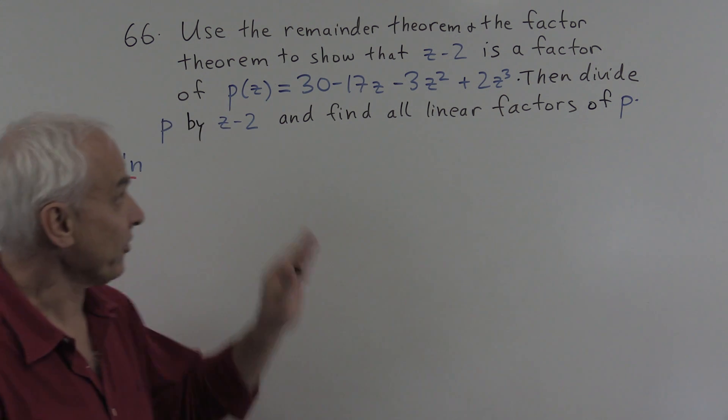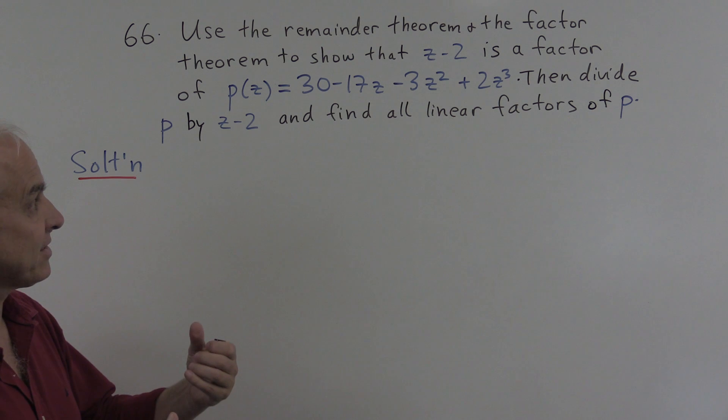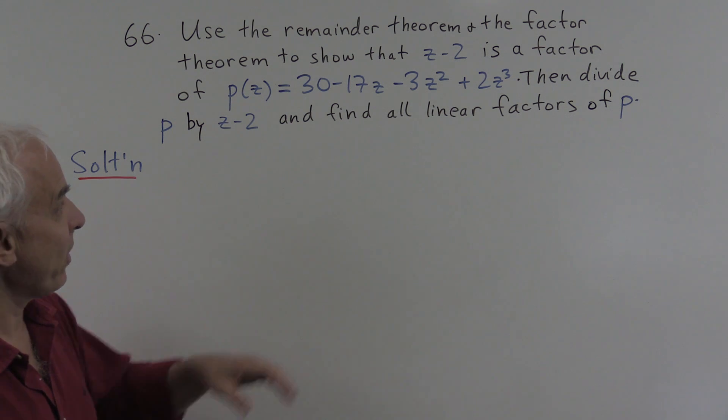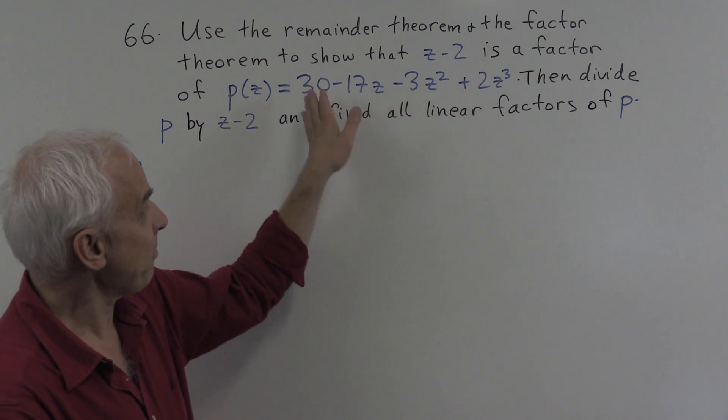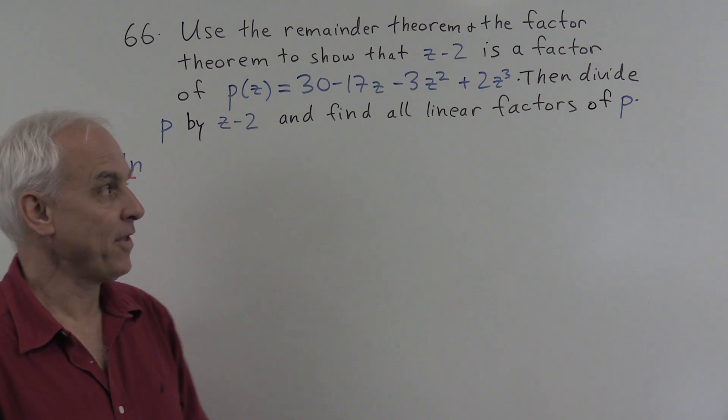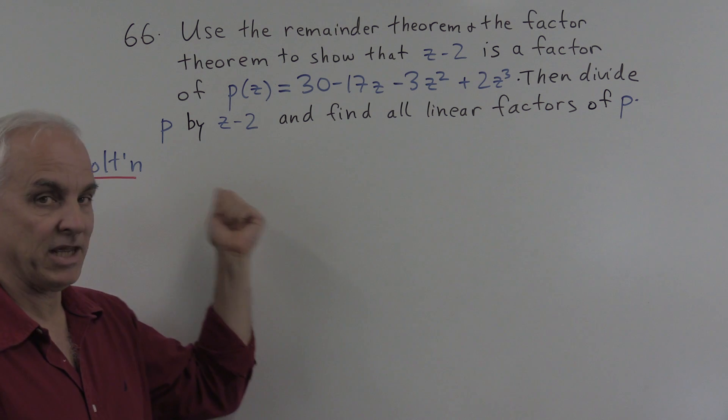All right, so let's review what the remainder theorem says in this case. The remainder theorem says that if we want to know what the remainder is when you divide a polynomial by z minus a, then all you have to do is evaluate p(a).